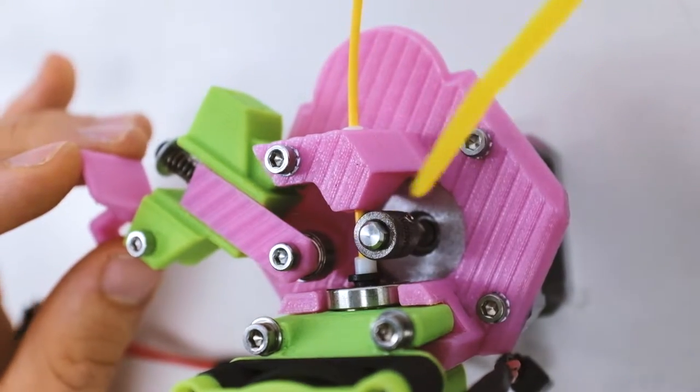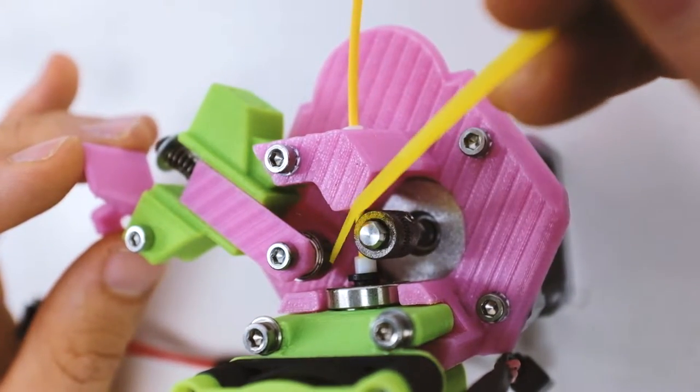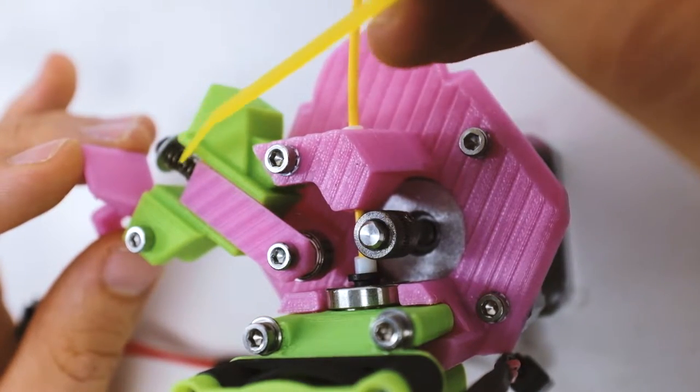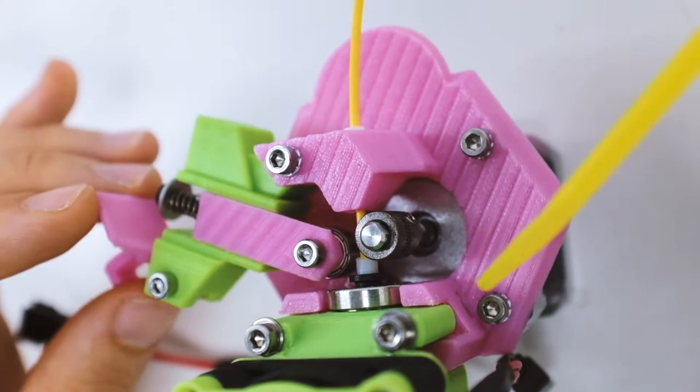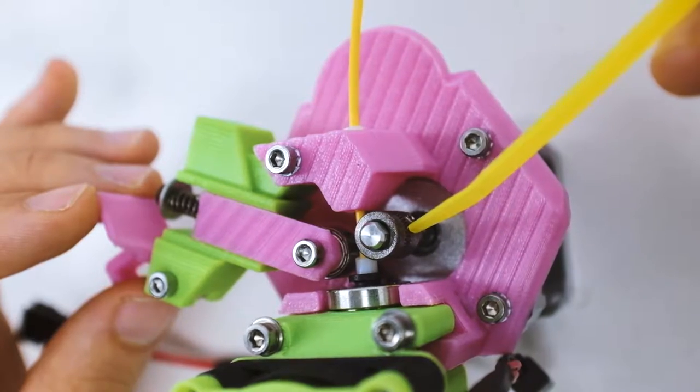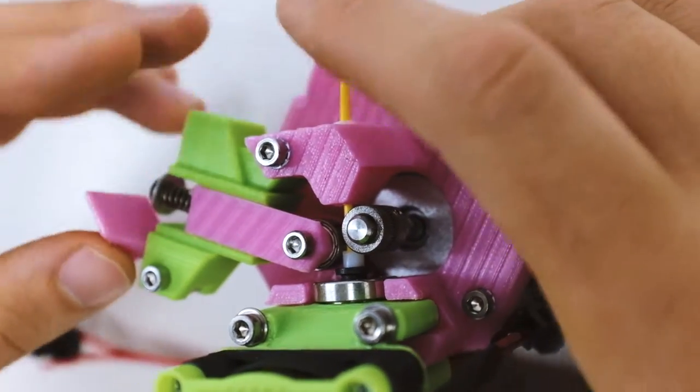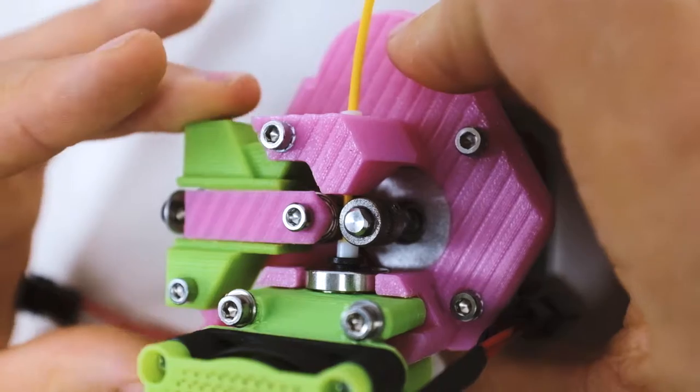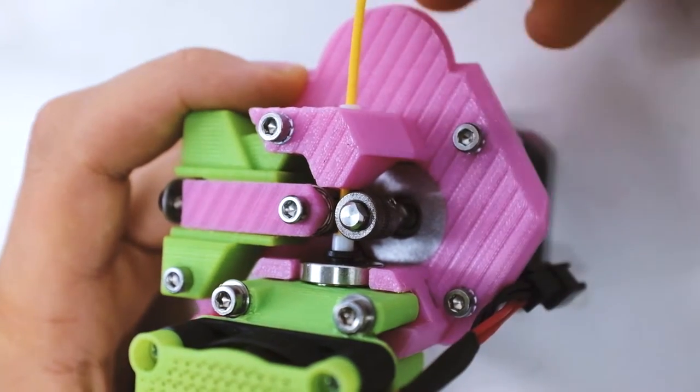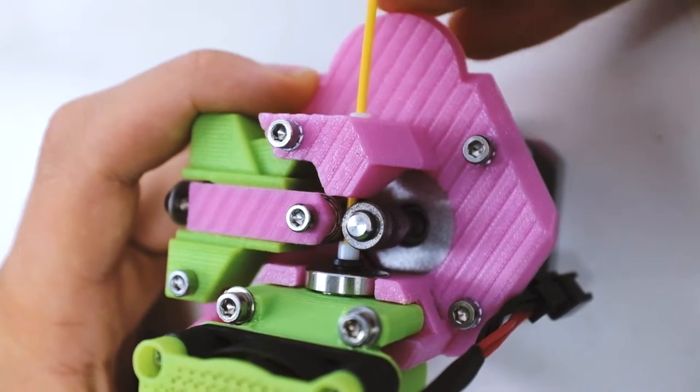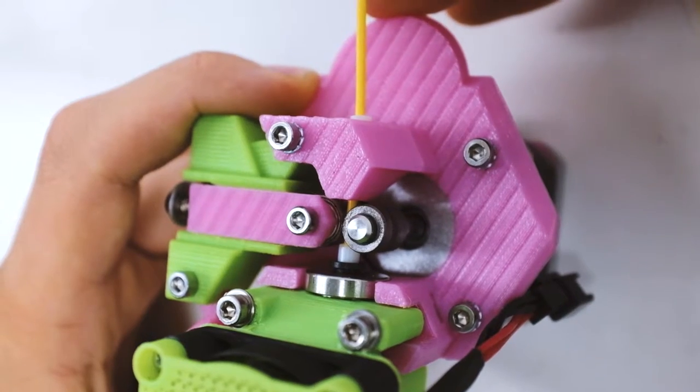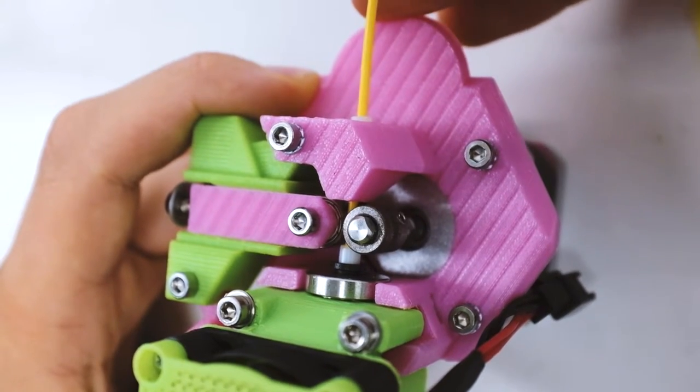The filament feeder has a bearing on one side pushed by a spring against the filament and thusly pressing it into the teeth of the drive gear on the other side. This way when the drive gear rotates, its teeth dig into the filament and effectively push it down into the shallow depths of the hot end.